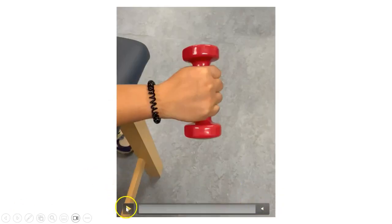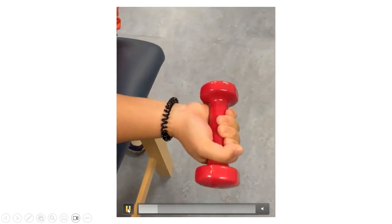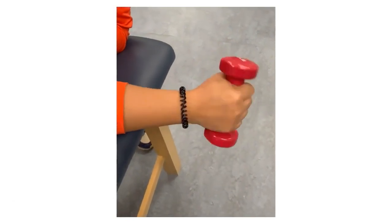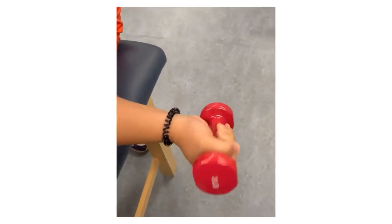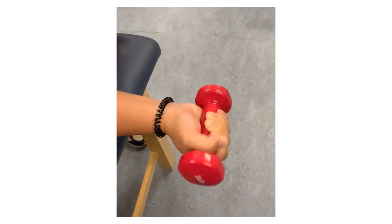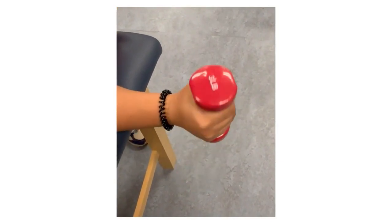This is a demonstration of the exercise. This exercise has you turn your wrist down so that your palm faces down and then back up. This exercise aids in range of motion and strengthening.